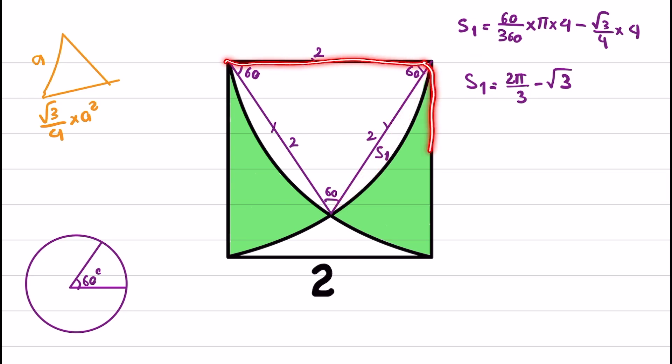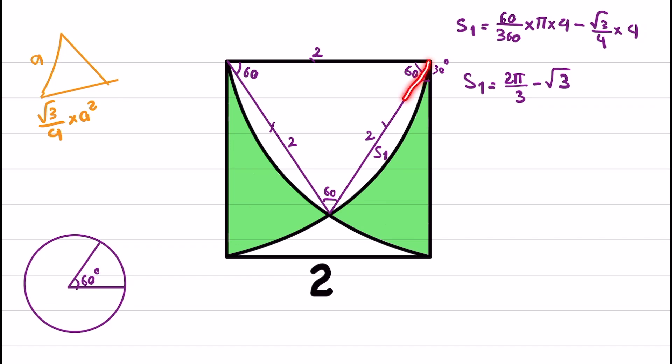In the square, the angles are right angles, so we have 90 degrees here. If the upper part is 60°, the remaining part is 30°. If you look at this sector, this is also a sector in a circle, which now has angle 30 degrees.